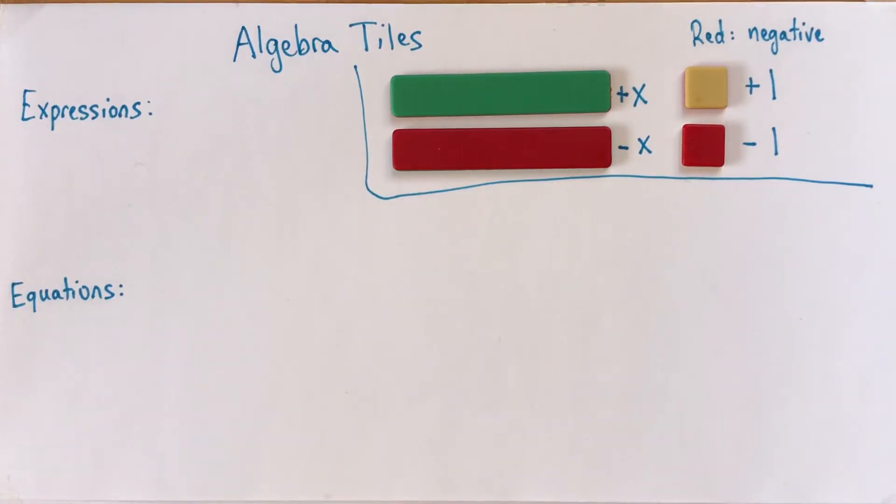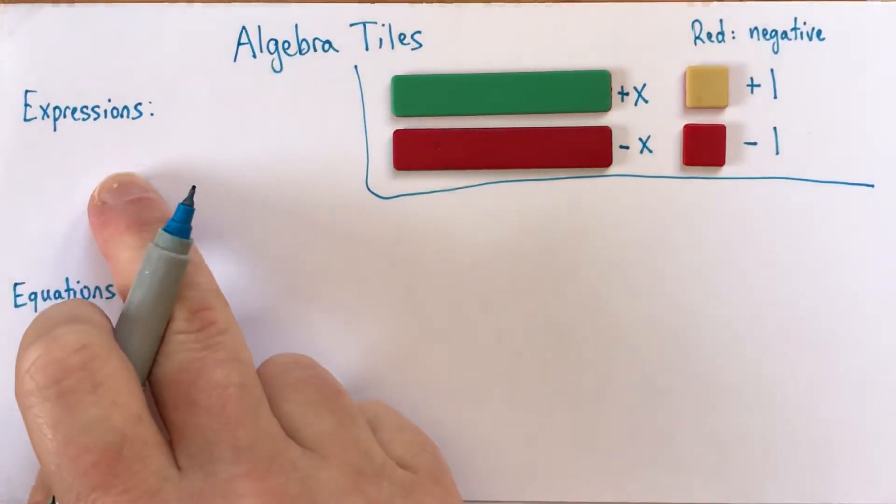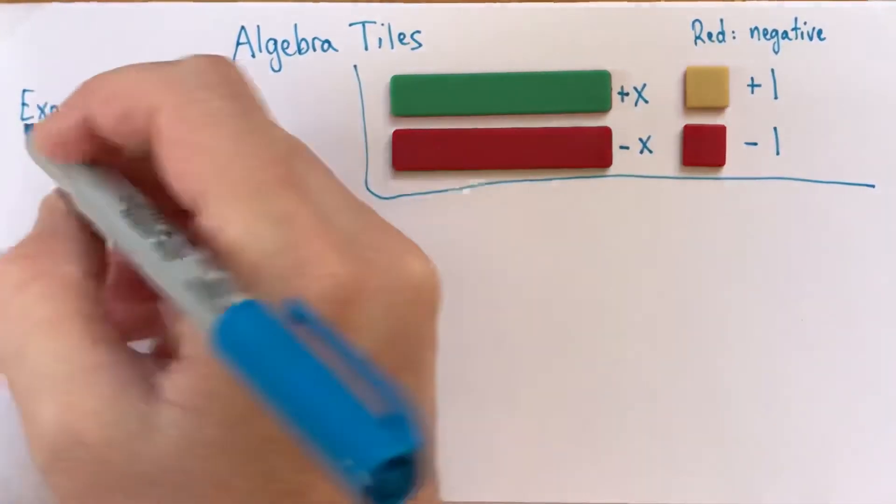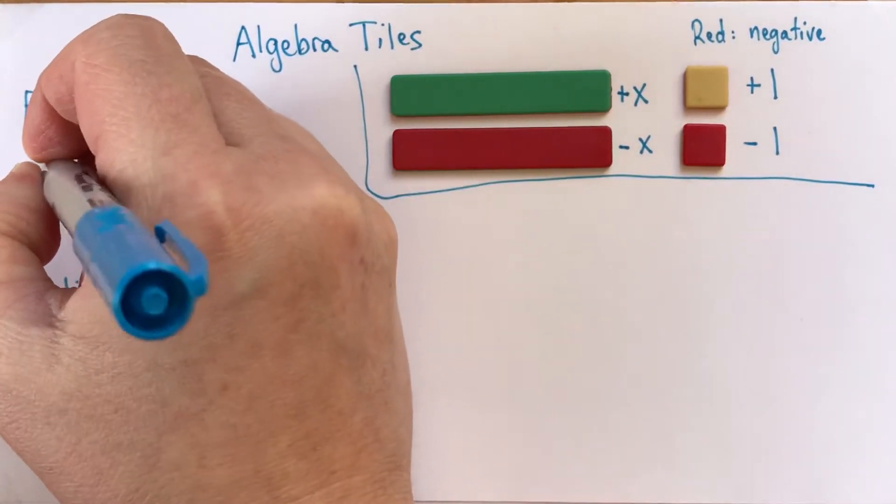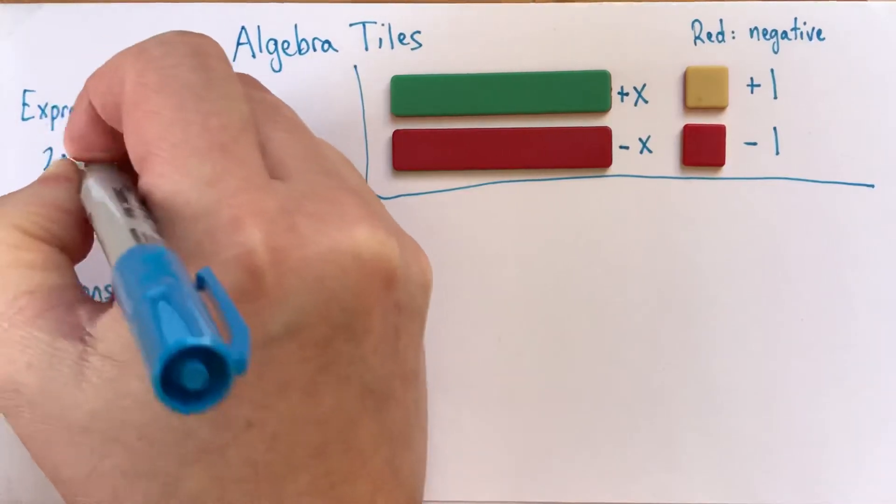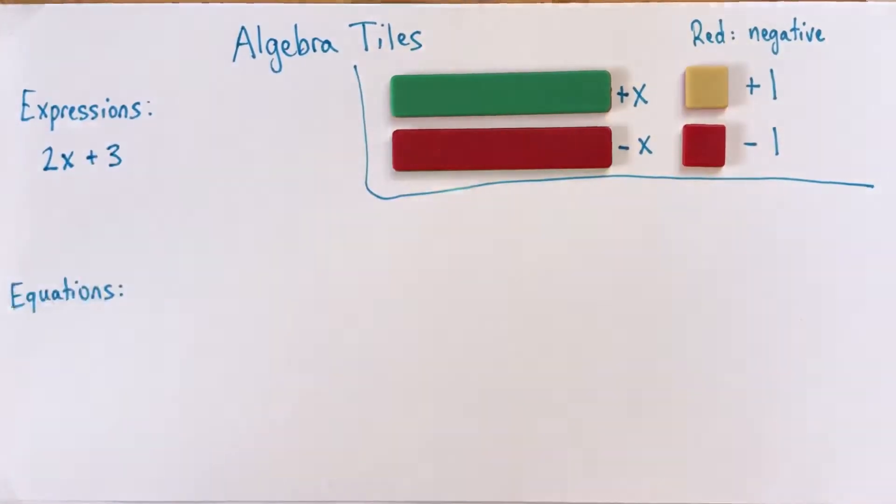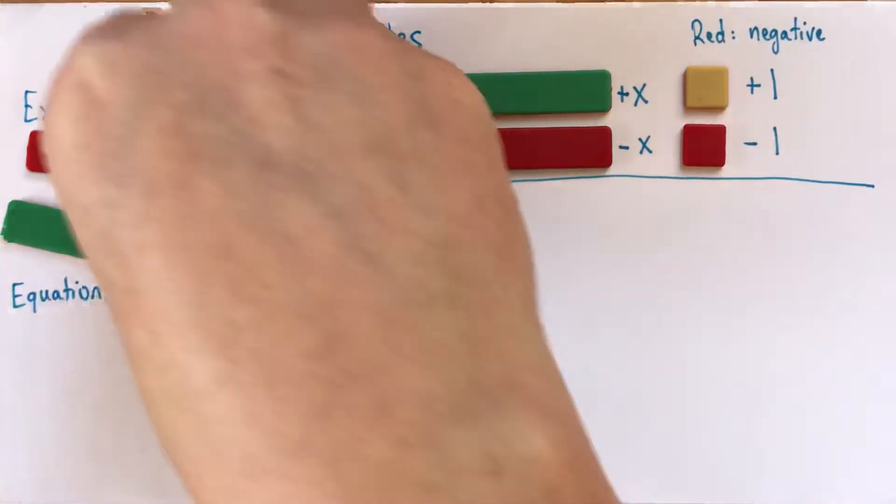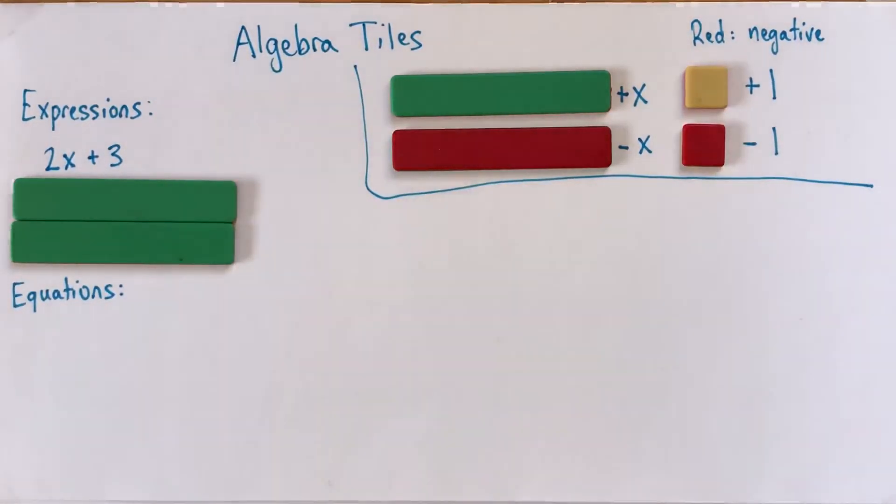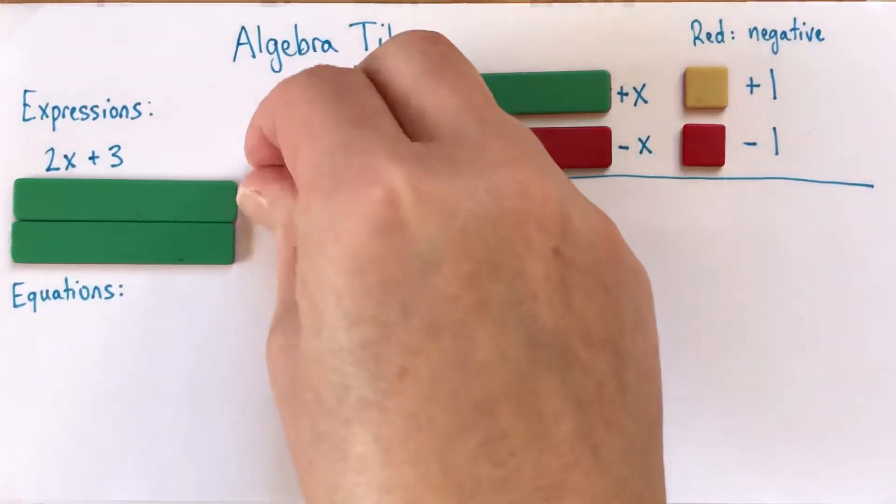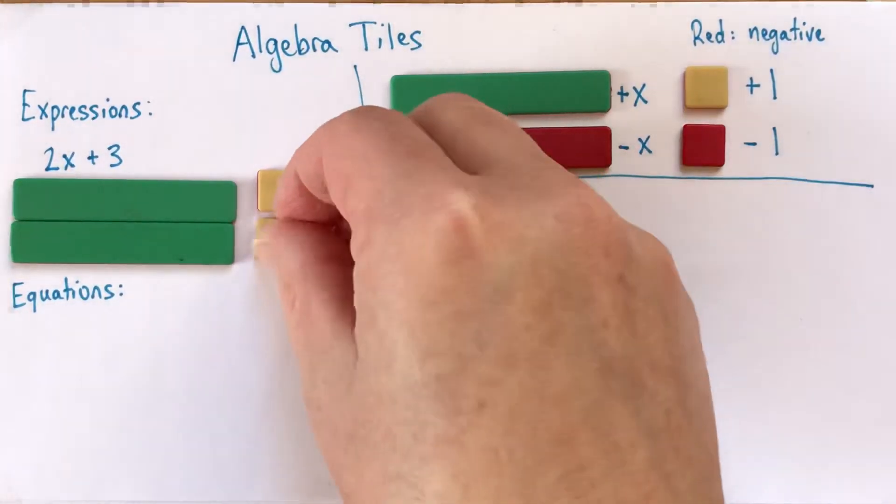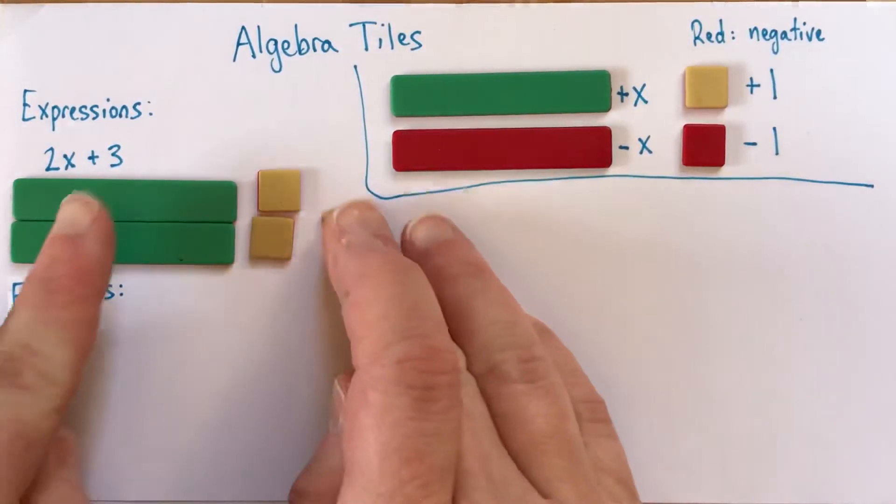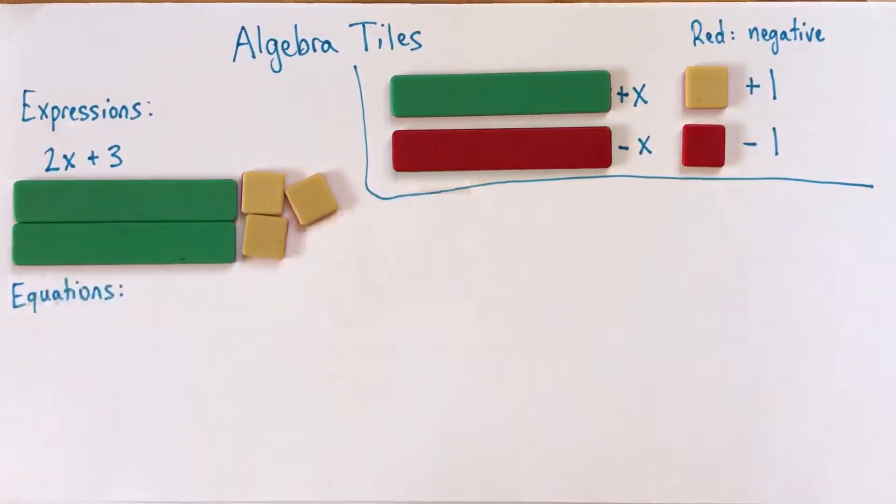I'm going to show you a quick example of how we can use algebra tiles to represent an expression. So for example, if we wanted to represent 2X plus 3, we just get out 2X tiles, make sure they're both positive, and then we'll get out plus 3. There. That's 2X plus 3.